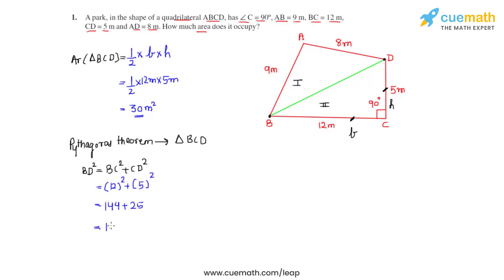On addition, we get that as 169. As we know that 169 is the square of 13, we can write that BD equals 13 meters in length.